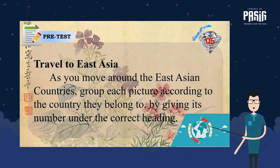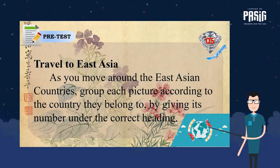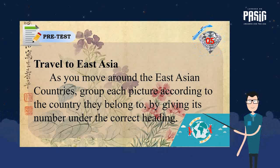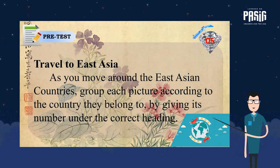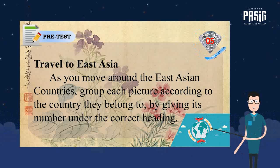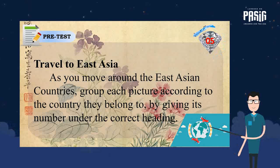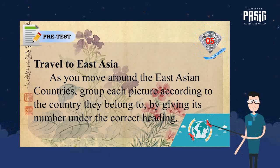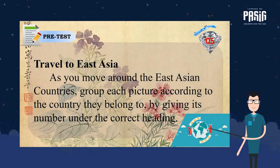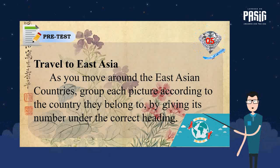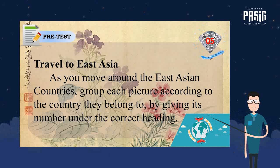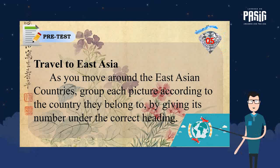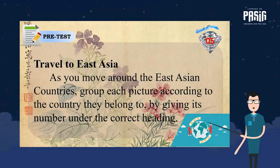Before anything else, let's have a simple exercise. I want to determine whether you have any prior knowledge about our lesson. The title of this exercise is 'Travel to East Asia.' As you move around the East Asian countries, group each picture according to the country they belong to by giving its number under the correct heading. I will give you 5 seconds to think of the answer.